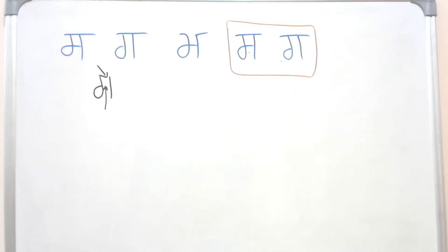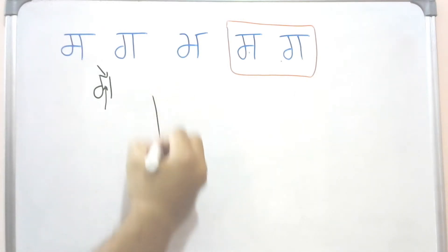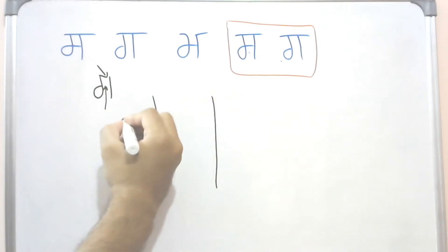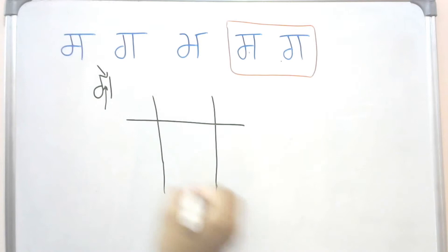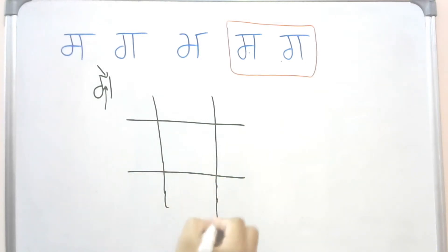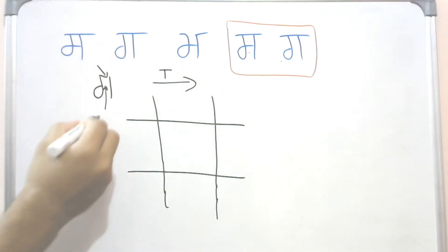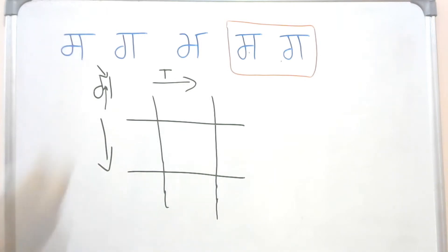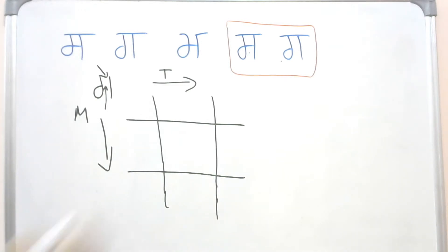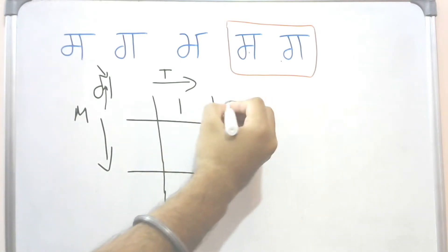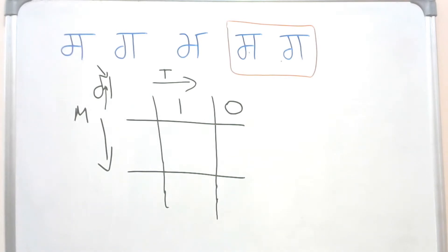Let me lay it out this way — one axis for the top line and one for the middle line. I can have a line on the top of the letter; I will represent that with a one. Or I cannot have a line on the top; that's a zero. Let's represent it in binary — it will be easy to understand.